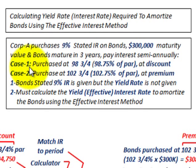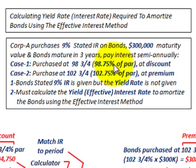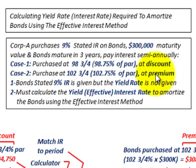We're going to look at two separate cases. First, where they purchased the bonds at 98.75% of par — purchased at a discount, because they pay less than the maturity value. Then we'll look at case 2, where they purchased the bonds at 102.75% of par, which is a premium — they pay more than what they'll receive at maturity.